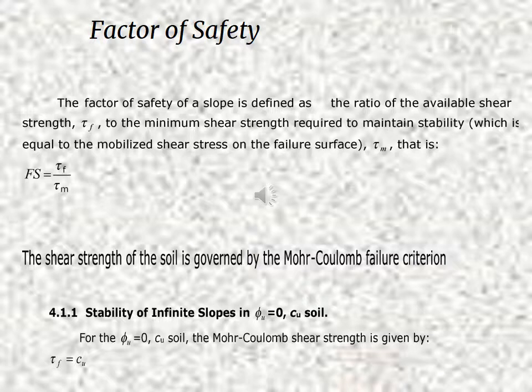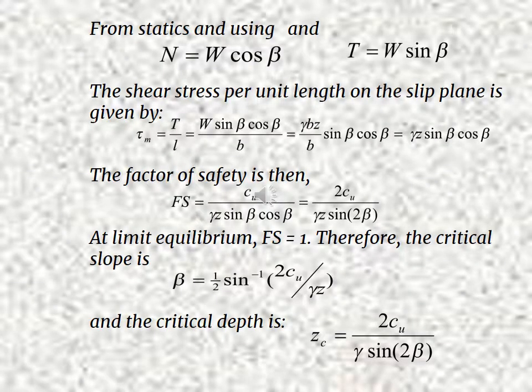The factor of safety of a slope is defined as the ratio of the available shear strength tau_f to the minimum shear strength required to maintain stability, governed by Mohr-Coulomb failure. For the phi_u equals zero case and C equals zero, or for phi_u equals zero soil, the Mohr-Coulomb shear strength is given by tau_f equals C_u. From statics, the normal force equals W cos beta and the tangential force equals W sin beta.